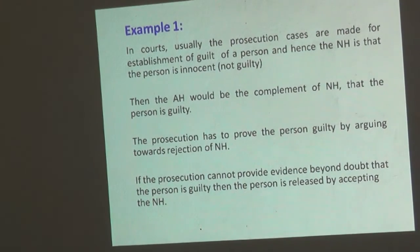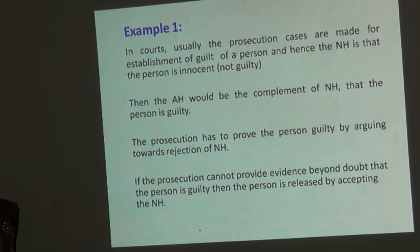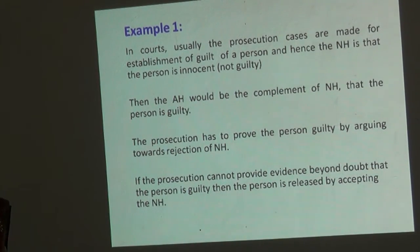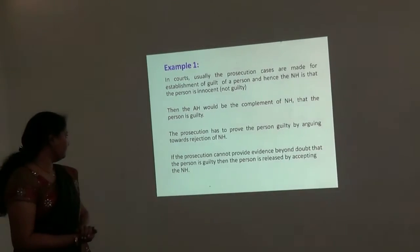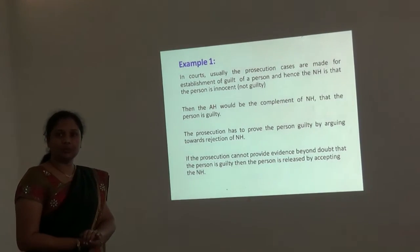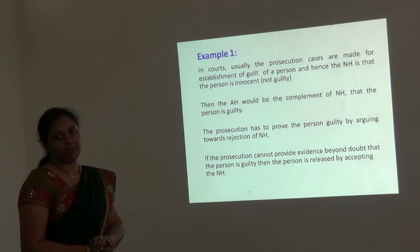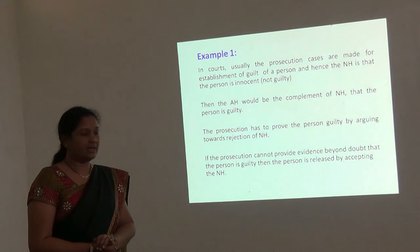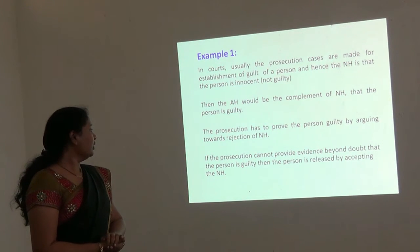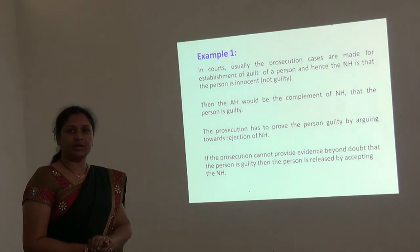In court, usually the prosecution cases are made for establishment of guilt of a person. Hence, we always assume that the person is not guilty. So the null hypothesis is set up as: the person is not guilty. Then the alternate hypothesis will be that the person is guilty. The prosecution has to prove that the person is guilty by arguing for the rejection of null hypothesis. But in case proper evidence is not produced against a person, then we reject the alternate hypothesis, or we accept the null hypothesis, saying that the person is not guilty.